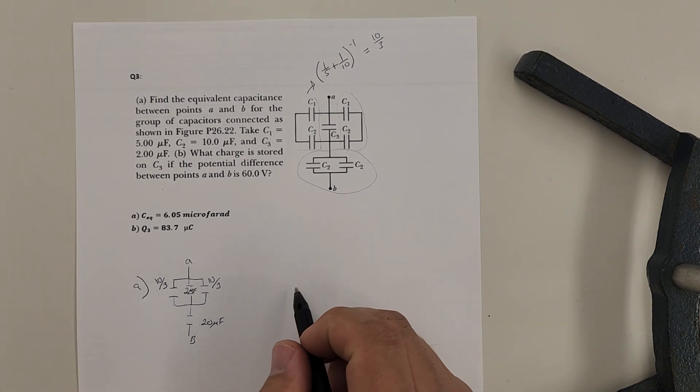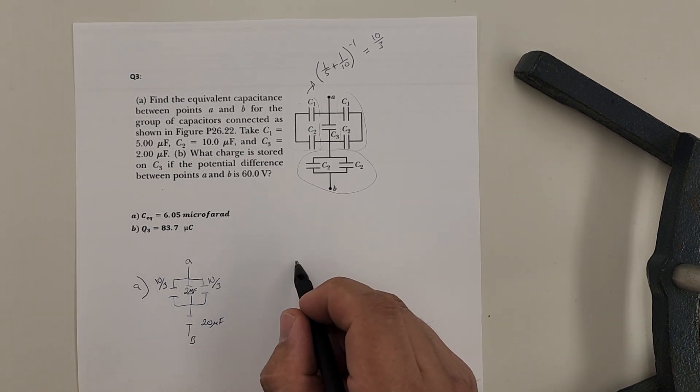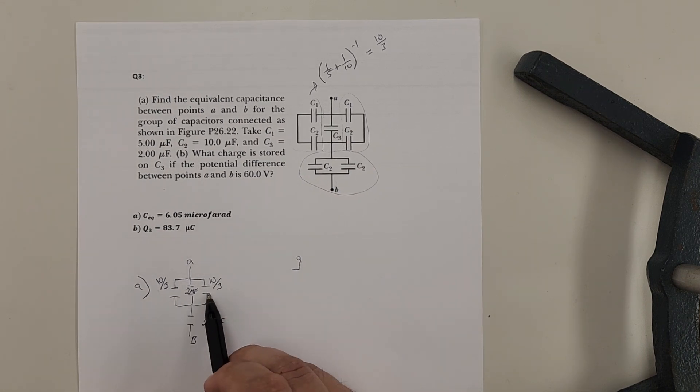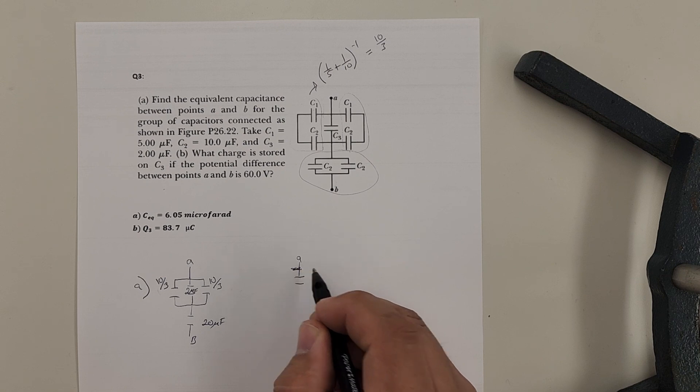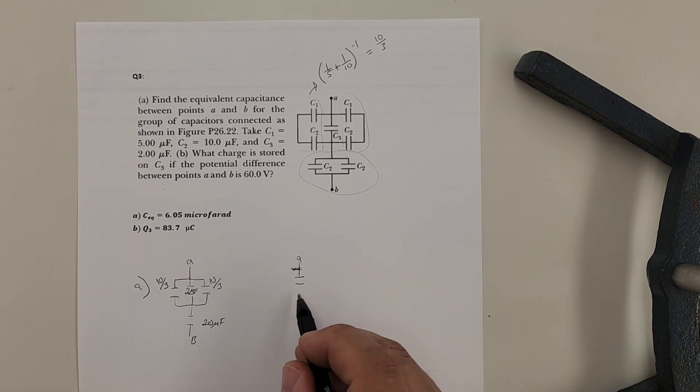Okay. Now I can simplify that down. I see that I actually have one, two, three of them all in parallel. So I can combine that and just make it into one. Okay. And then I'll have to leave this one alone for now until I figure that one out.